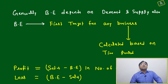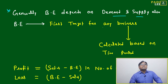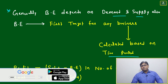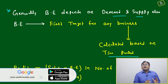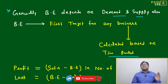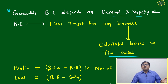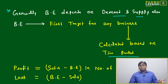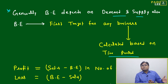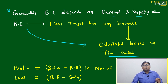Generally break-even depends on demand and supply, but we won't go into that here. Break-even is the first target for any business and is calculated based on time period. Whatever you are planning, how much time will it take to achieve break-even? Every business has a different time period depending on the type of industry — manufacturing, service, etc. Based on market research, a normal norm is set for how much time it will take to achieve break-even.